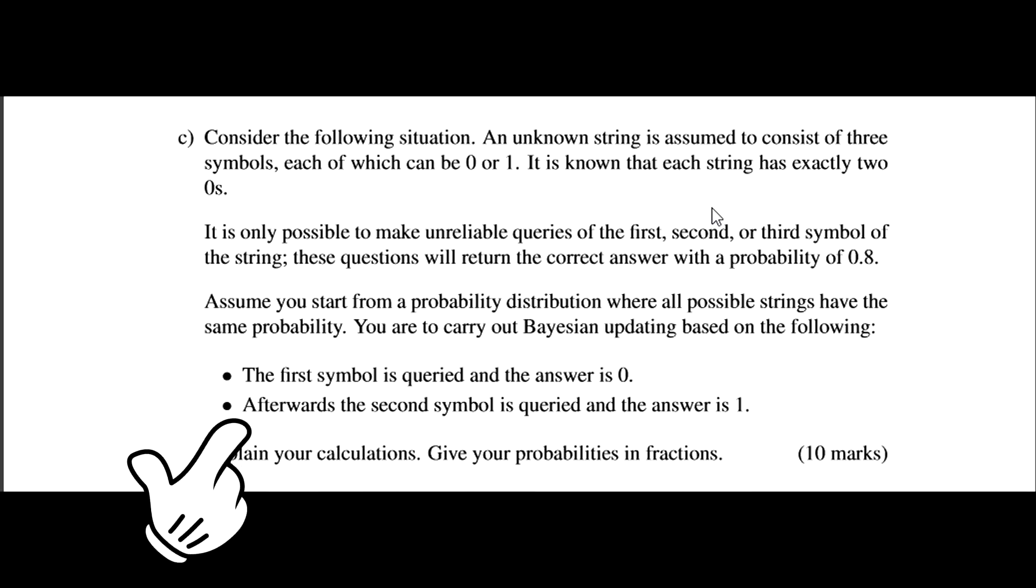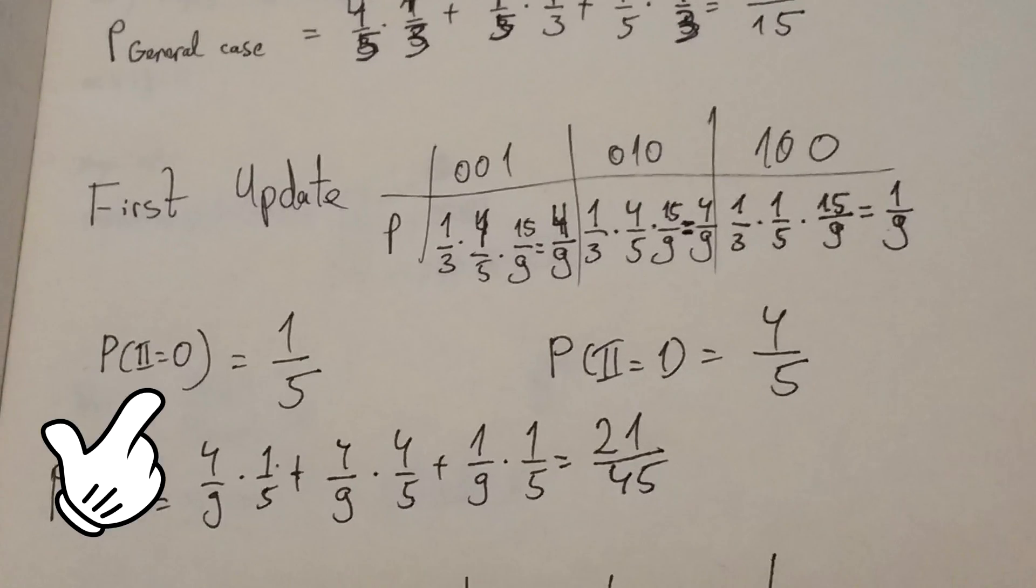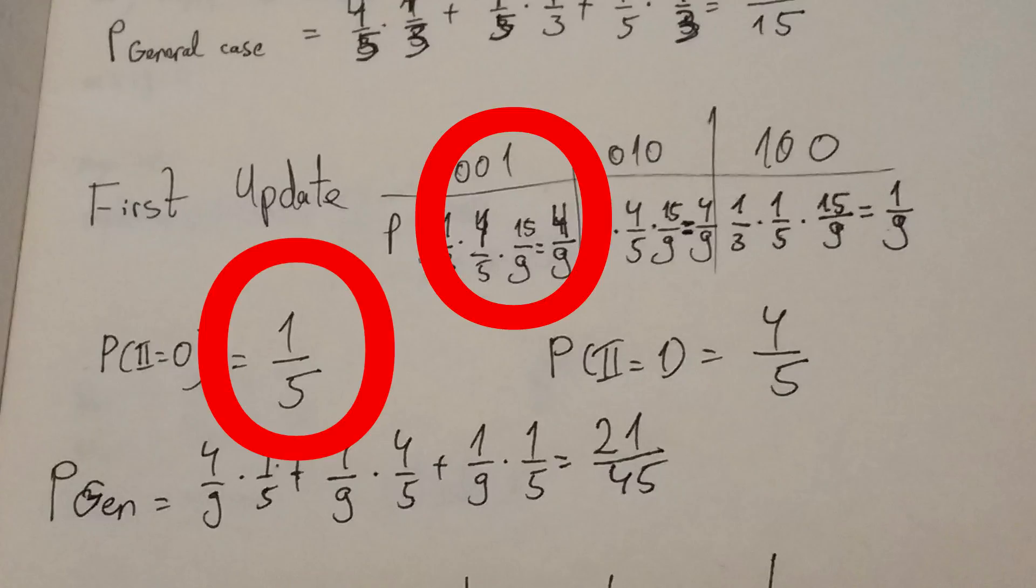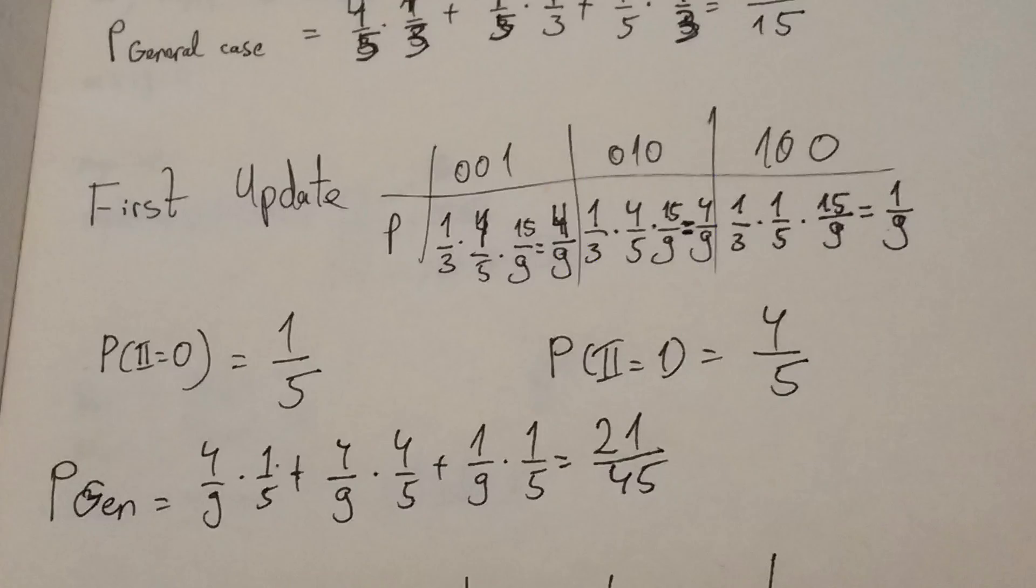Now, we query again, and the probability of the second digit being equal to one is four fifths, and the P of the second digit being zero is one fifth. We find what the odds of this happening are by multiplying one fifth times four ninths, plus four fifths times four ninths, plus one fifth times one ninths. This is, in a sense, the first cell of update one times the probability of getting zero, the second cell of update one times the probability of getting one, and so on. We get twenty-one over forty-five.